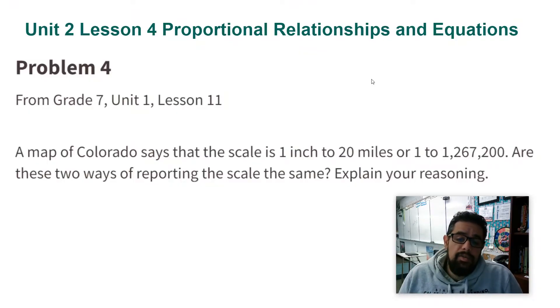A map of Colorado says the scale is 1 inch to 20 miles, or 1 to 1,267,200. Are these two ways of reporting the scale the same? Explain your reasoning.